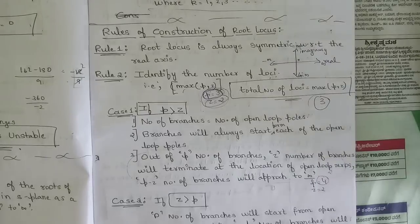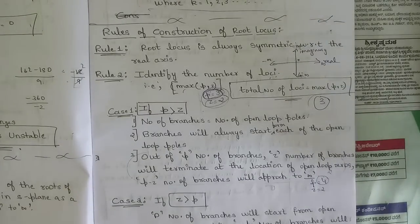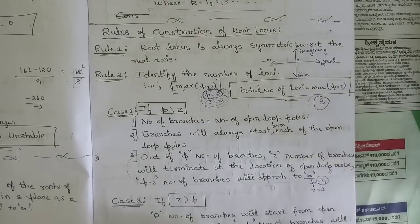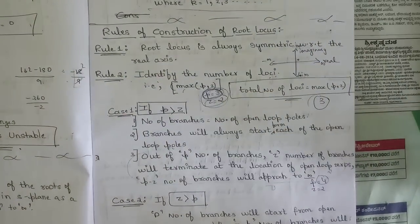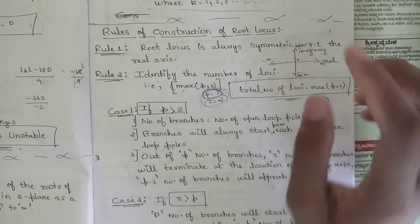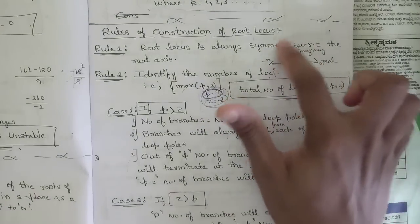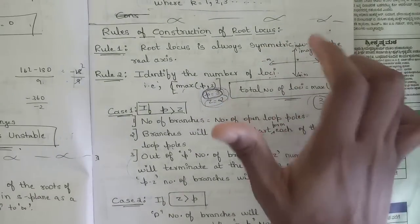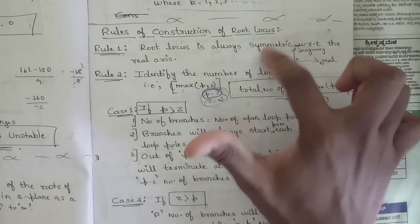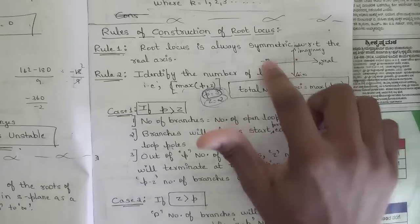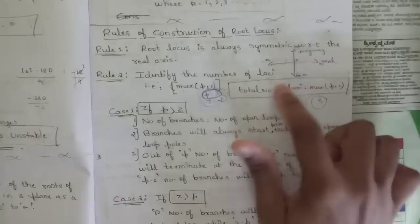The next topic discussed in this module is root locus, which is very important. We have discussed the rules of construction of root locus. The first rule says that root locus is always symmetrical with respect to the real axis. The branches of root locus always lie in the left-hand plane, and the root locus is symmetric to the real axis.